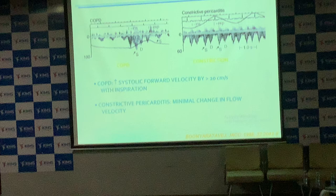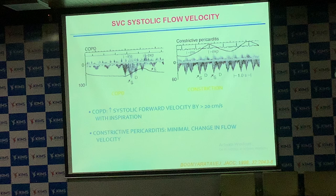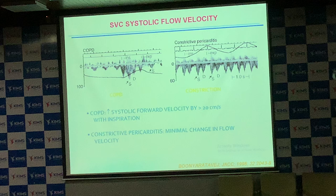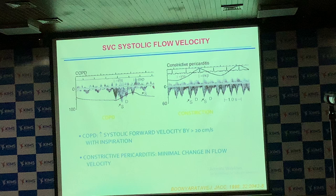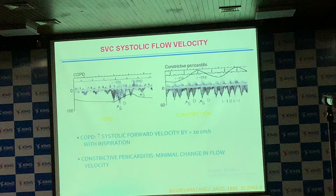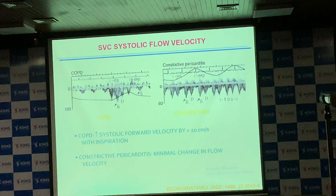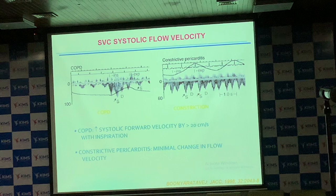Superior vena cava flows can be nicely studied from the right supraclavicular window to get an excellent Doppler pattern. Importantly, in COPD the inspiratory flow increases by more than 20%, whereas in constrictive pericarditis it does not increase at all or increases very minimally — this differentiates a lung problem from constrictive pericarditis. Diastolic flow reversal in the hepatic vein during expiration is very prominent and makes the diagnosis near certain, but you need ECG and respirogram to document it.